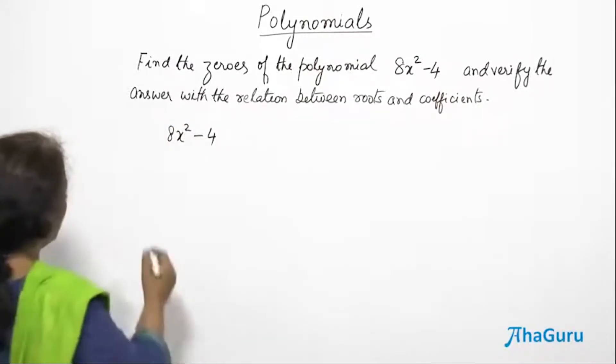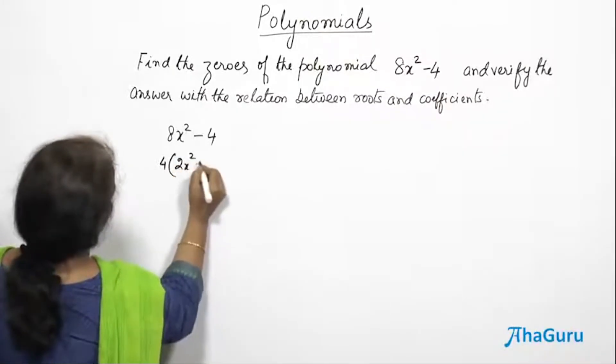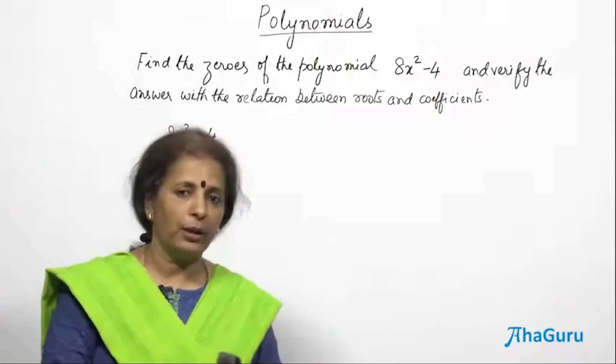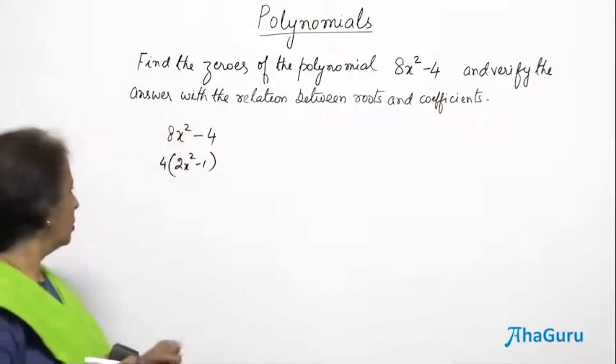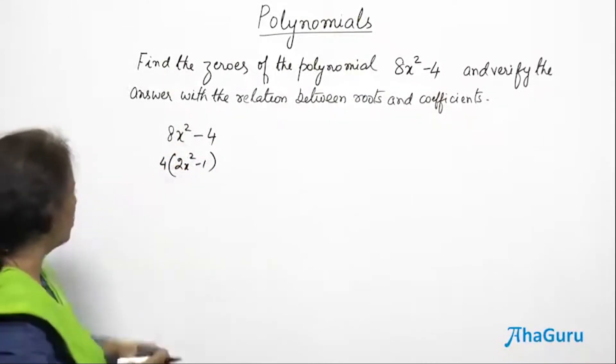If I take out the 4 common, I get 2x² - 1. Now what do you mean by zero of this polynomial? Some value of x should make this 0.